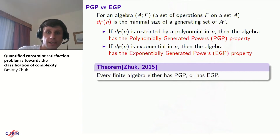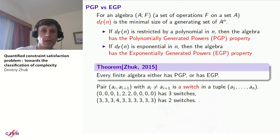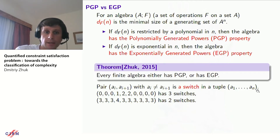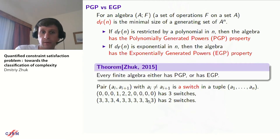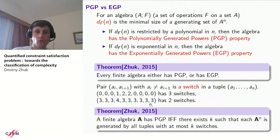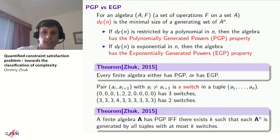We say that an algebra has the Polynomially Generated Powers (PGP) property if DF(N) is bounded by a polynomial in N. In the disjunction example we actually have PGP — it's even linear. And if DF(N) is exponential in N, we say the algebra has the Exponentially Generated Powers (EGP) property. In 2015, I proved that every finite algebra has either PGP or EGP — this is not obvious because we could easily have something in between. For any finite algebra, either it's sufficient to have polynomially many tuples to generate everything, or we need at least exponentially many. Moreover, I showed how to choose a generating set of polynomial size: if the algebra has PGP, then there exists a constant k such that A^N is generated by all tuples with at most k switches, where a switch in a tuple is a position where a_i ≠ a_{i+1}.